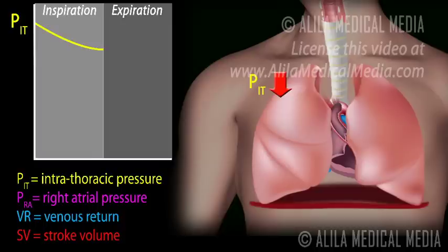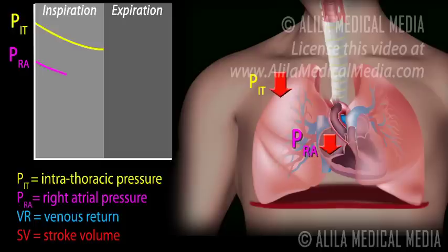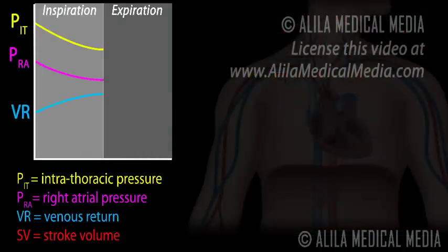Part of this change in pressure is transmitted across the walls of the heart, lowering right atrial pressure and thus facilitating venous return. Another aspect of the diaphragmatic descent is the concomitant increase in abdominal pressure.